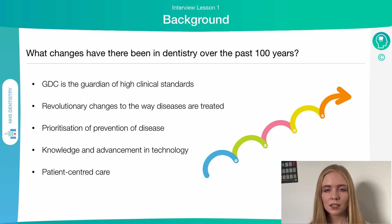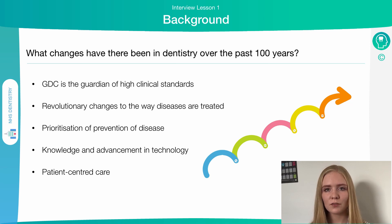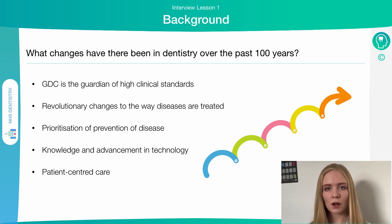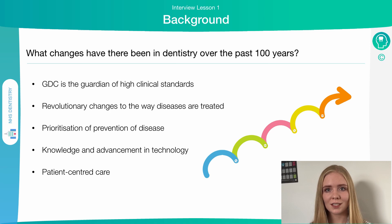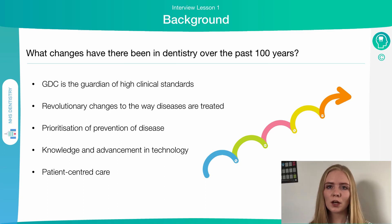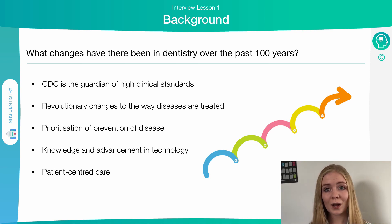There have been changes in the way disease is treated. Advancements in technology and discoveries in disease mechanisms mean there are different methods of treatment available that didn't used to exist. There's now a prioritisation of preventing disease rather than treating it — teaching patients about good oral hygiene and how to prevent caries is key to maintaining as much natural tooth tissue as possible. Advancing technology like robotic tools and CAD CAM systems even allow 3D printing of crowns that used to be handmade.